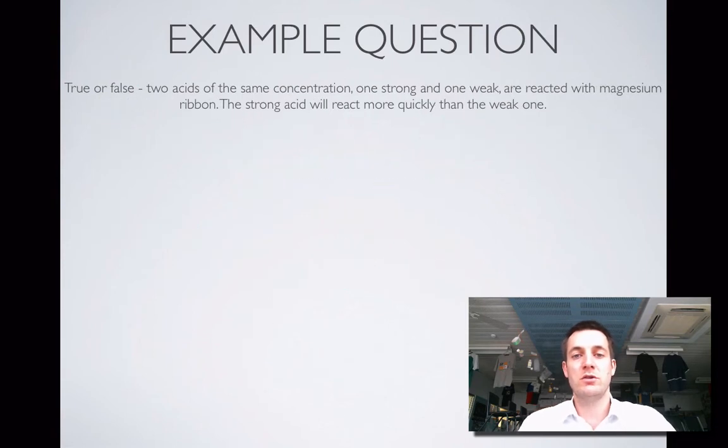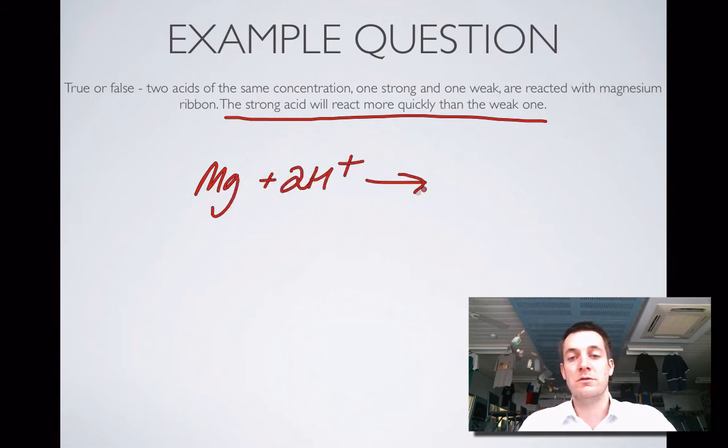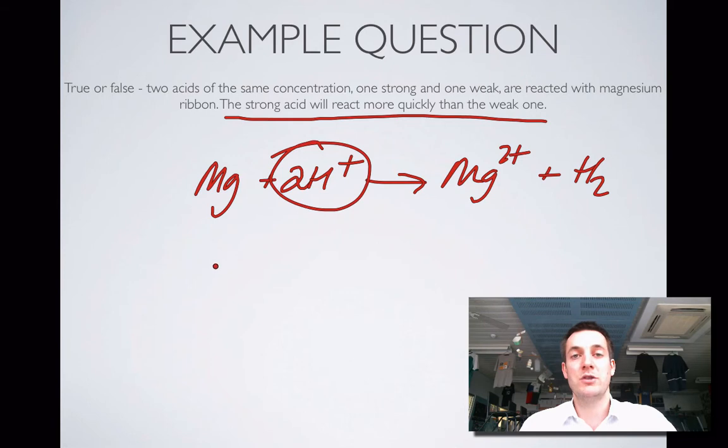True or false: two acids of the same concentration, one strong, one weak, are reacted with magnesium ribbon. The strong acid will react more quickly than the weak one. Following from the previous question, you might think there'll be no difference. But notice this is not a stoichiometry question anymore, it's a rates question. We've got magnesium reacting with H+ ions to form magnesium ions and hydrogen. For this reaction to happen, these two particles have to collide. In the strong acid, the concentration of hydrogen ions will be much higher than in the weak acid. There'll be more particles per unit volume, collisions will happen more often, and the rate will be higher. So this one is actually true. They'll both produce the same amount of hydrogen because eventually the weak acid will release the same number of H+ ions, but the reaction will be faster with the strong acid.